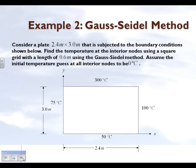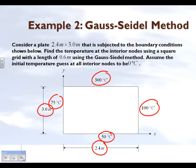We're going to take the same example as for the direct method. We have a plate which is 3 meters wide and 2.4 meters long. The temperatures on the four sides are given, and we want to find out what the temperature in the plate is at different points. We are going to take a grid length of 0.6 meters, and we're going to assume that the initial temperature guess at the interior nodes is 0 degrees Celsius. A better guess would be the average of the boundary condition temperatures, but to keep things simple, we choose 0 degrees Celsius.